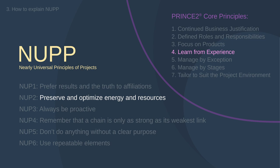The fourth Prince2 principle — learn from experience — in NOOP is seen as a way of preserving and optimizing energy and resources. There are other connections too: using repeatable elements also relates to learning from experience. The fifth Prince2 principle — manage by exception — is really about delegation, which is a topic in the second NOOP: preserve and optimize energy and resources. When we delegate properly we also value other people working in the project, increasing their buy-in.